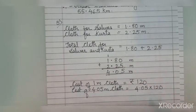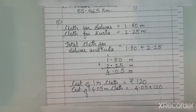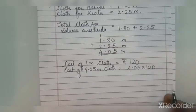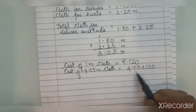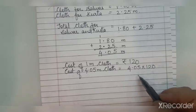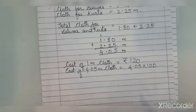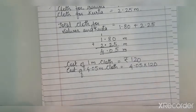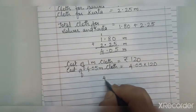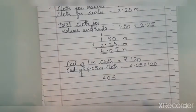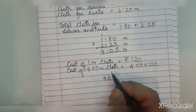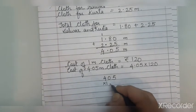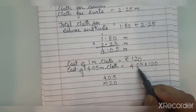This is a multiplication of a decimal fraction, which is covered in the next practice set, but I will explain it here — it is very simple. Whenever you have multiplication with a decimal fraction, you multiply by removing the decimal point first. So if there was no decimal, the number 4.05 becomes 405. We multiply 405 by 120.